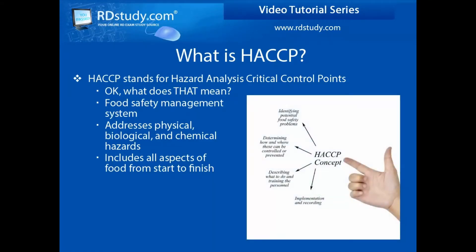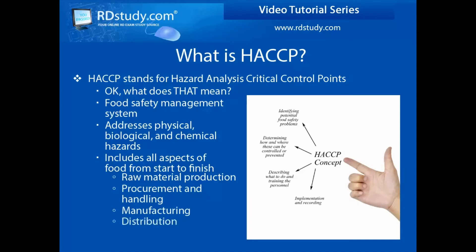Generally speaking, the concept is that you want to identify as many of the potential risks that food may encounter as it travels through your organization — from raw material production, to procurement and handling, manufacturing, all the way to consumption — and then determine where those risks are located and how to control or prevent them from occurring. You will also want to document how to avoid or manage the identified risks, how personnel are going to be educated, and then observe and document how well the system works.